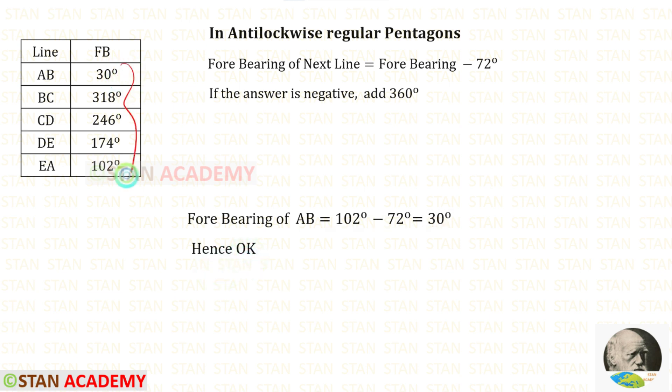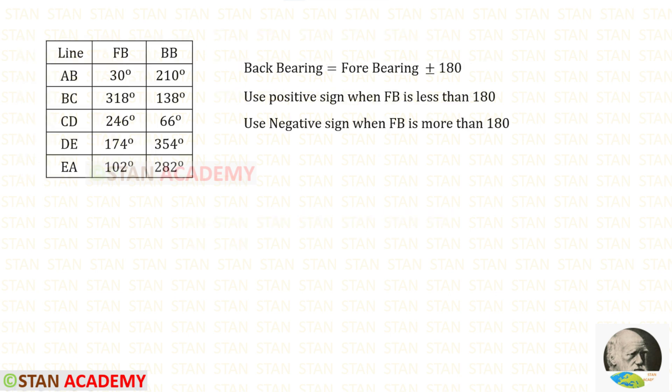We have found all of the forebearing. Now let us find the backbearing. Using the formula, we can find the backbearing. The formula is forebearing plus or minus 180.